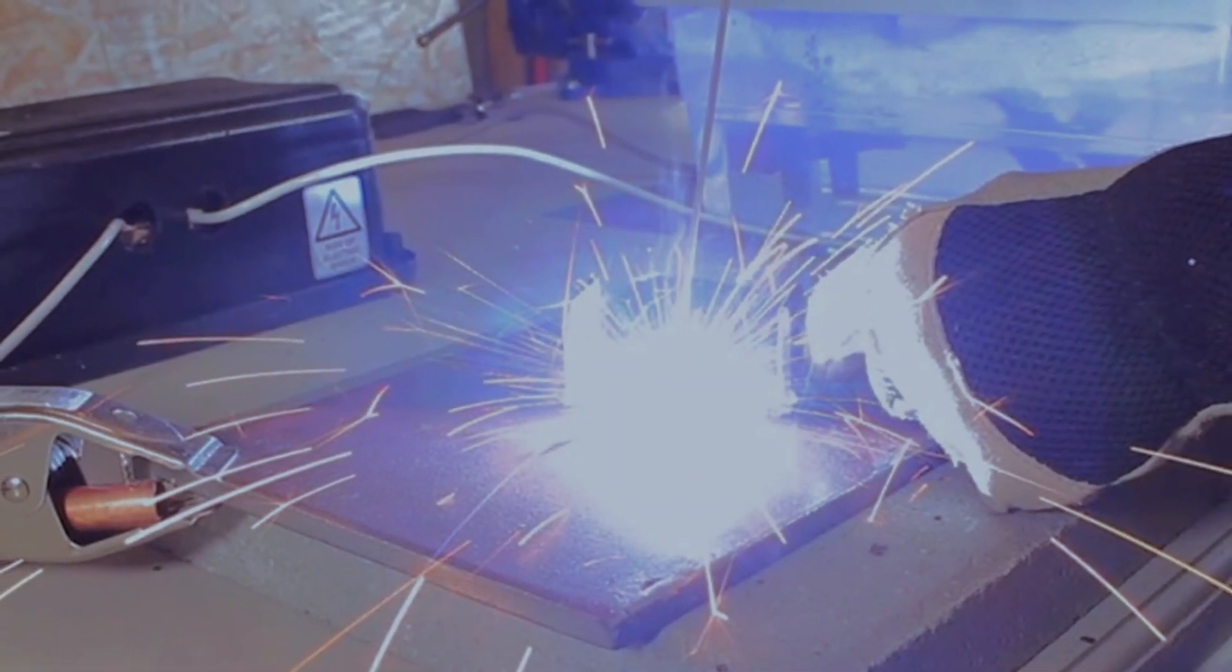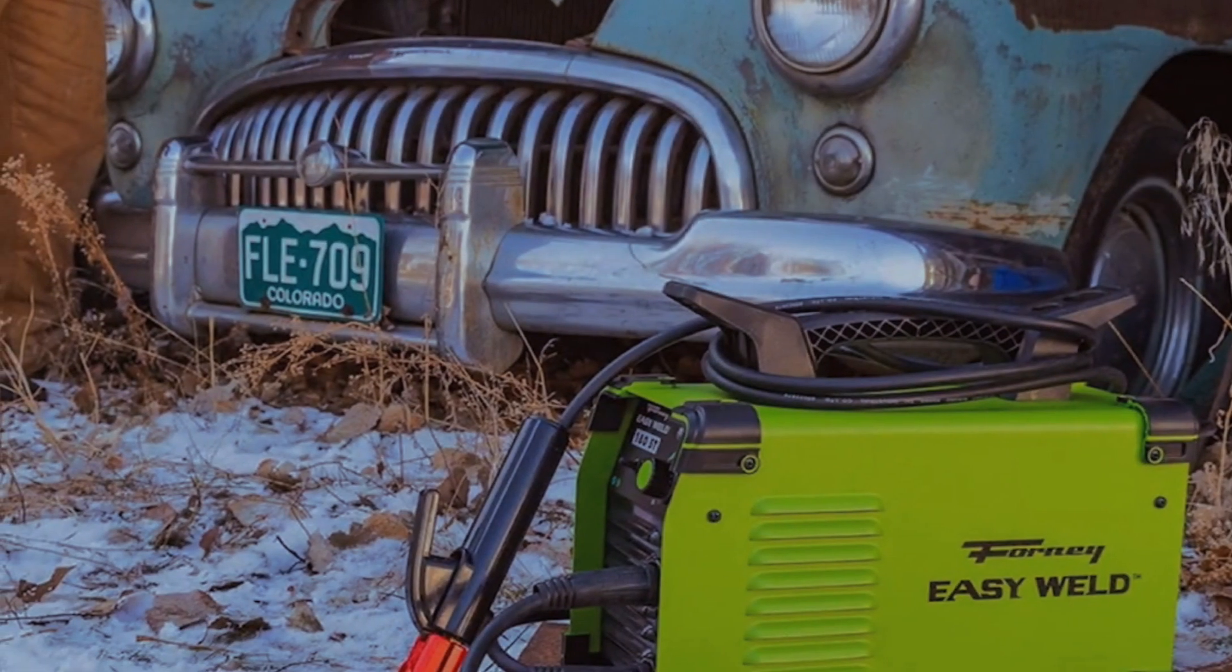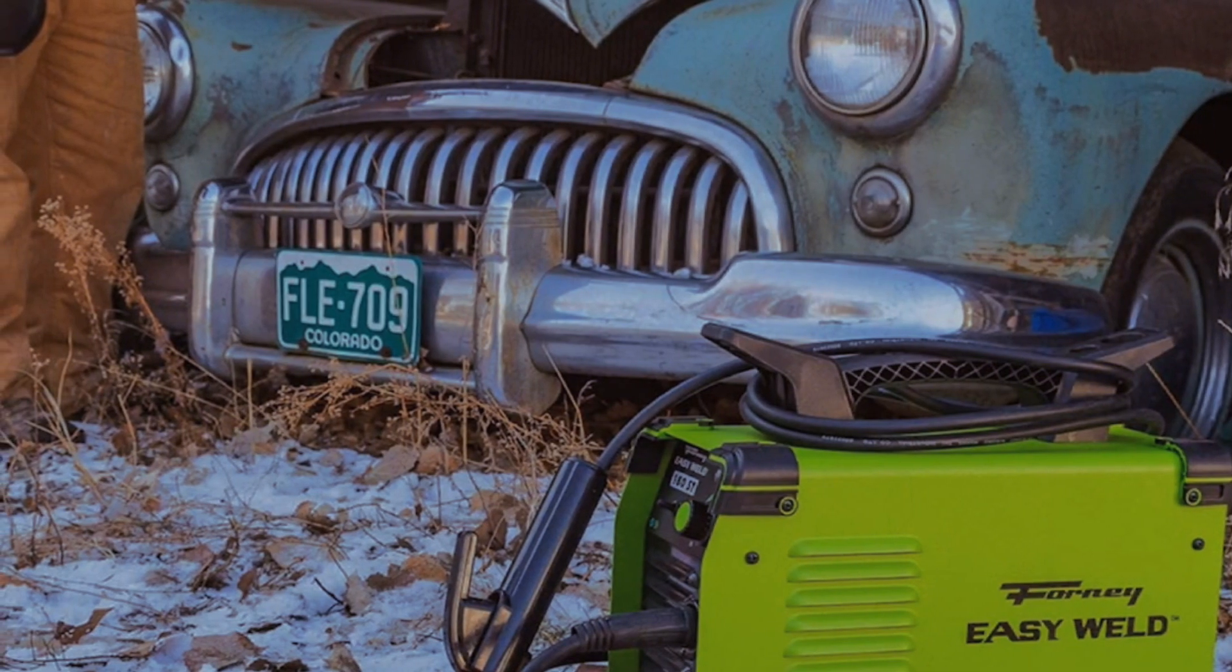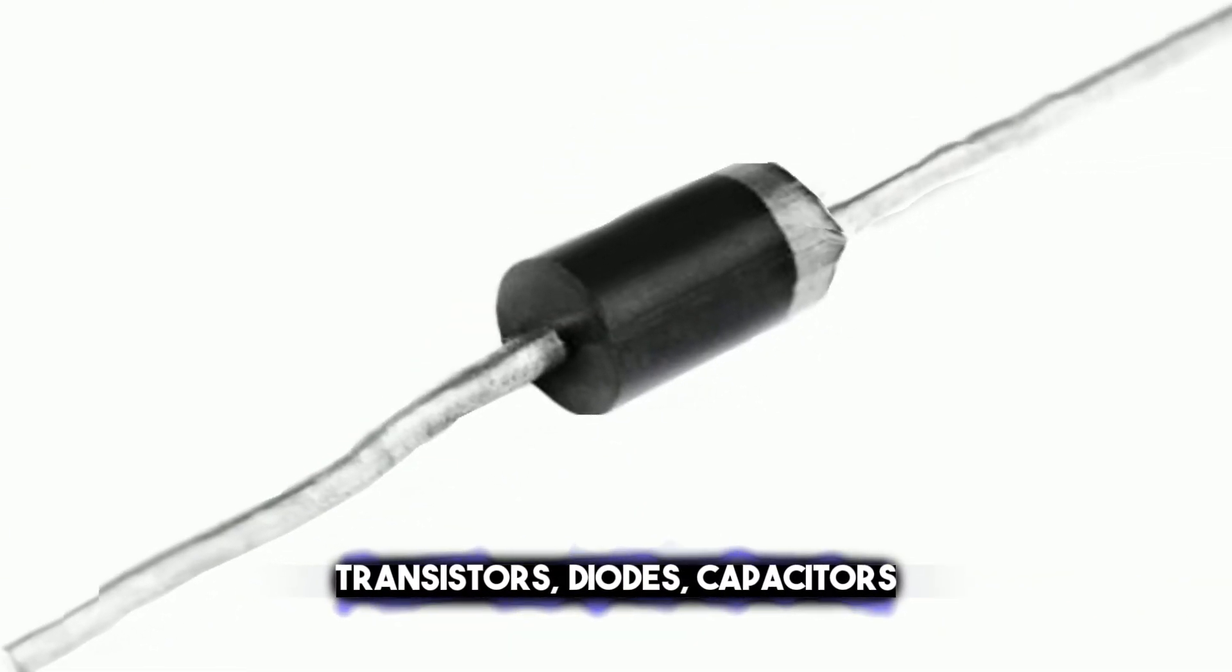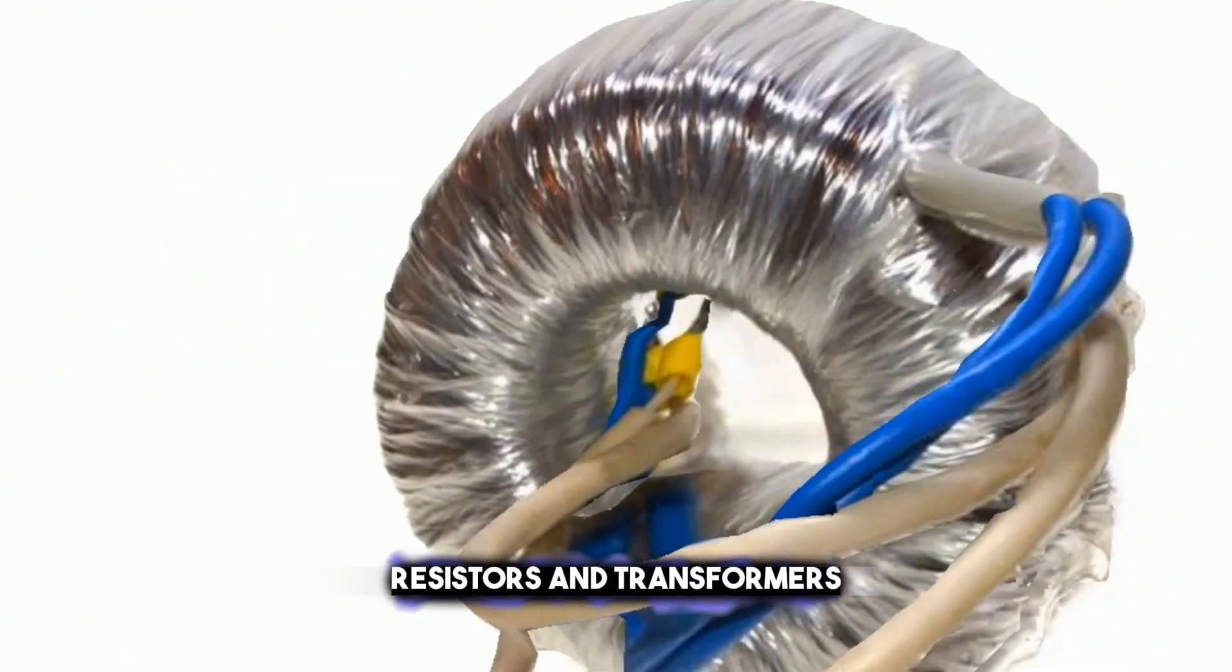There are many types and models of inverter welding machines available in the market. But you can also make your own using some electronic components like transistors, diodes, capacitors, resistors, and transformers.